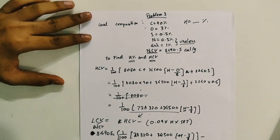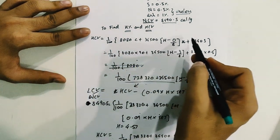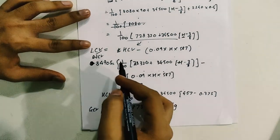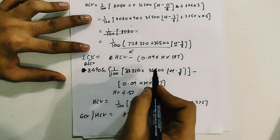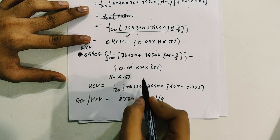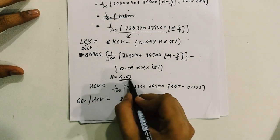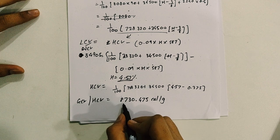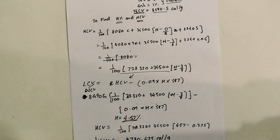Solving this gives HCV = 8730.475 cal/gram, also called GCV. To recap: we wrote HCV in terms of H using Dulong's formula, substituted it into the LCV formula with the given NCV of 8490.5 to find H = 4.57%, then used that to calculate HCV. The notes are linked below.